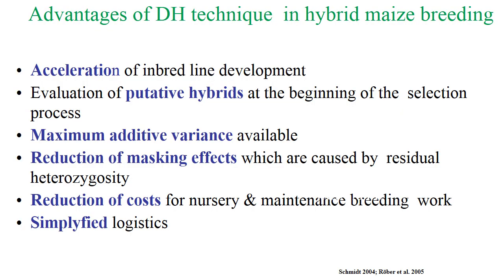Advantages of double haploid techniques: accelerating inbred development, putative hybrid formation as a beginning step, maximum additive variance available, reduction of masking effect caused by residual heterozygosity, reduction of cost for nursery and maintenance breeding work, and simplicity of logistics.